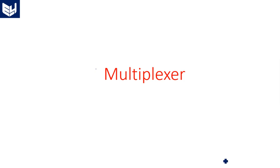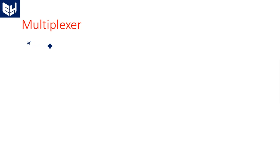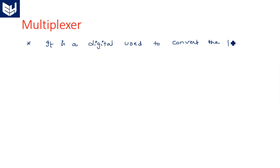Hi everyone. In this video I am going to explain the concept of a multiplexer. A multiplexer is a digital circuit that is mainly used to convert parallel data into serial data.